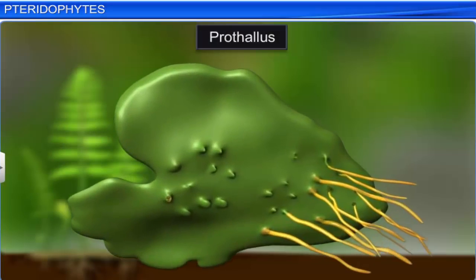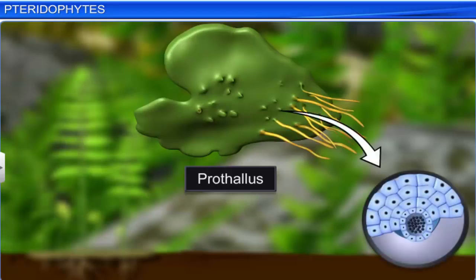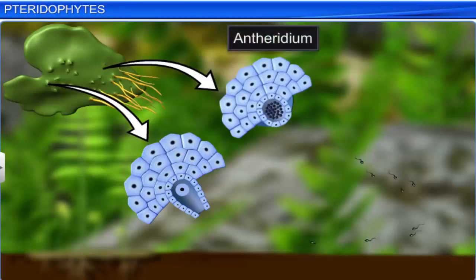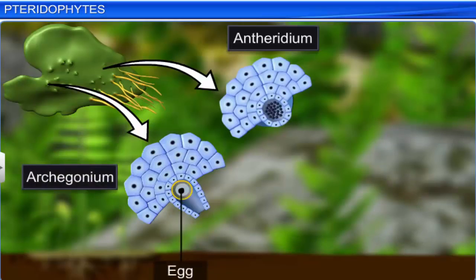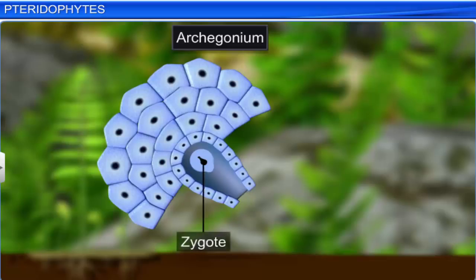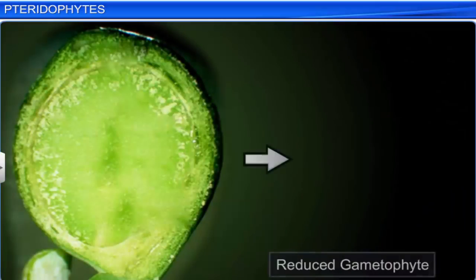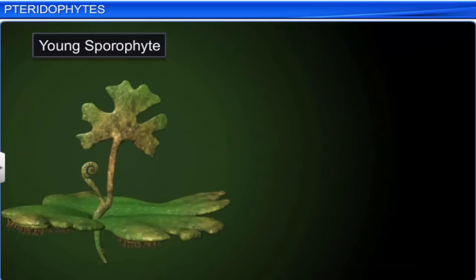The prothallus is a small, multicellular, free-living, and mainly photosynthetic gametophyte, which grows only in cool, damp, and shady places. The prothallus also bears the male and female sex organs, the antheridium and archegonium. The antheridium produces the male gametes called antherozoids, whereas the archegonium produces an egg. When released, antherozoids travel through water and eventually reach the mouth of the archegonium, where each one fuses with an egg to form a zygote. This zygote develops into a young embryo, which further develops into a multicellular and well-differentiated young sporophyte, and ultimately into a mature sporophyte.